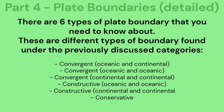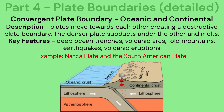Part 4 covers the previously discussed plate boundaries in more detail. There are six types of plate boundary to know. Convergent plate boundary — oceanic and continental: two plates move towards each other creating a destructive plate boundary. The denser plate subducts under the other and melts. Key features include deep ocean trenches, volcanic arcs, fold mountains, earthquakes and volcanic eruptions.